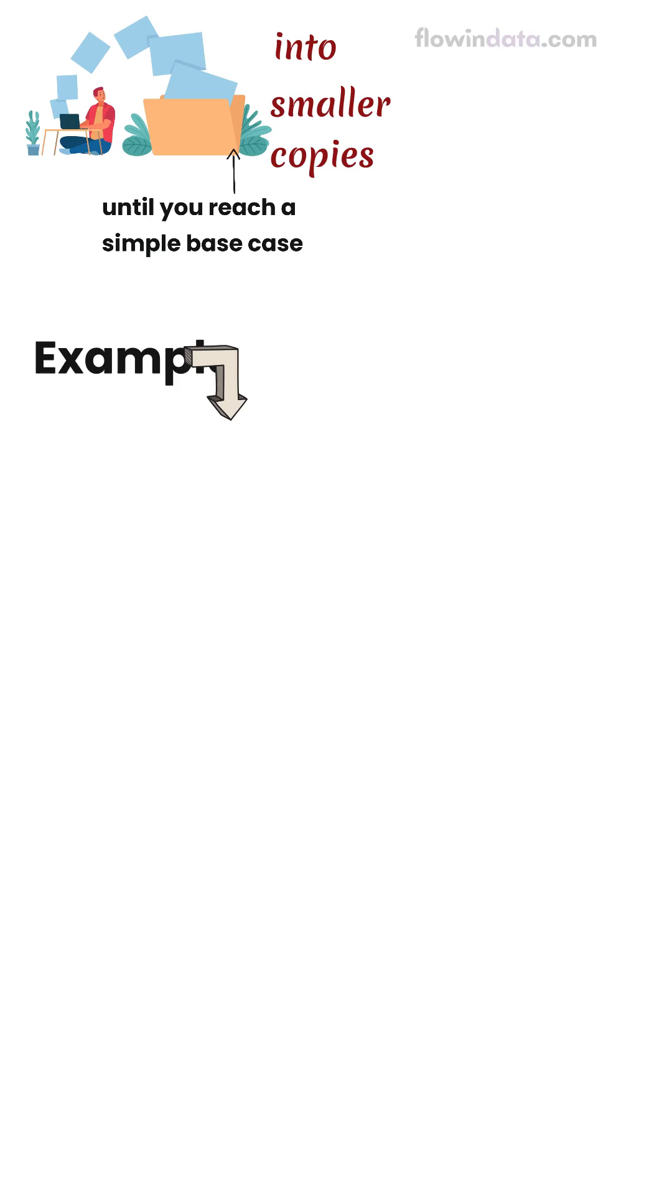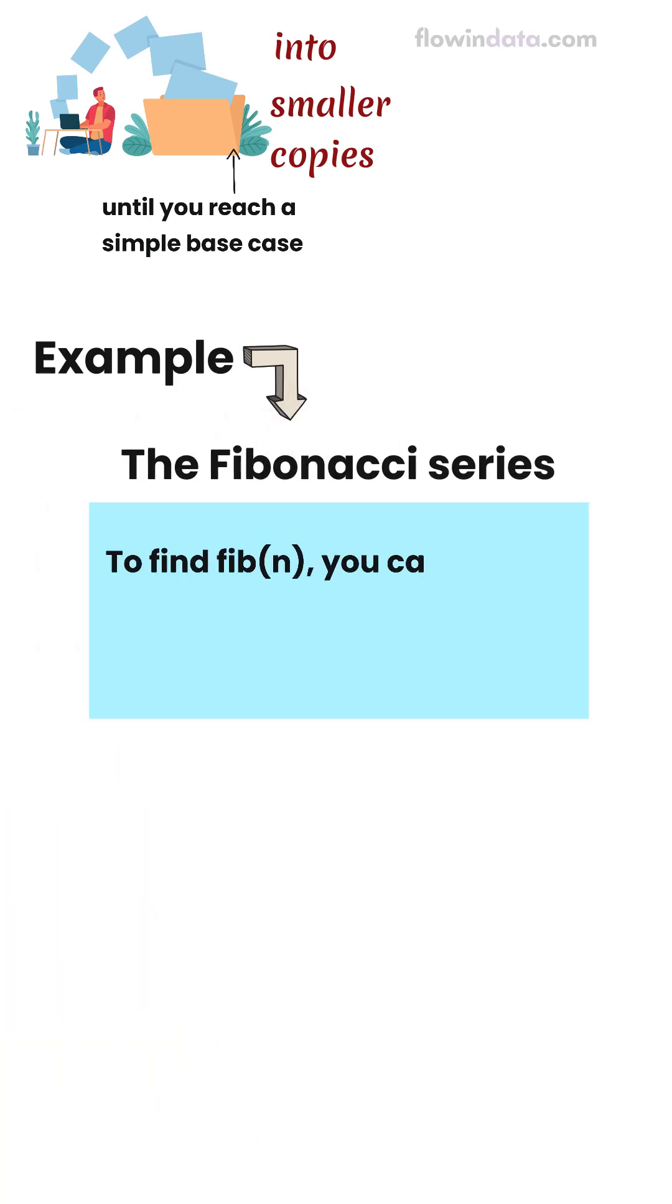Let's take an example. The Fibonacci series. To find Fib n, you call Fib n minus 1 and Fib n minus 2 and so on until you reach Fib 0 or Fib 1.